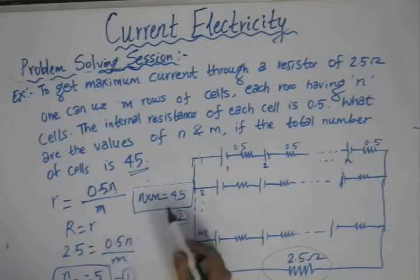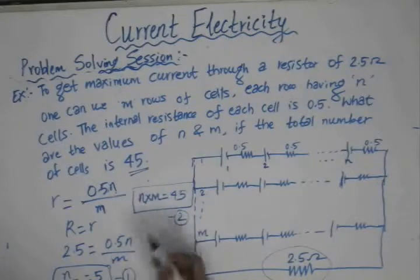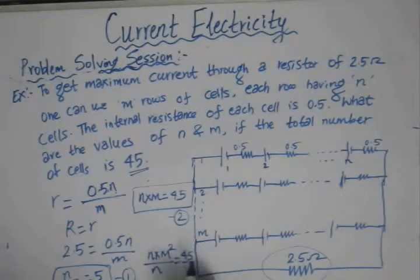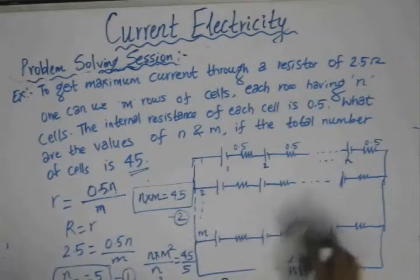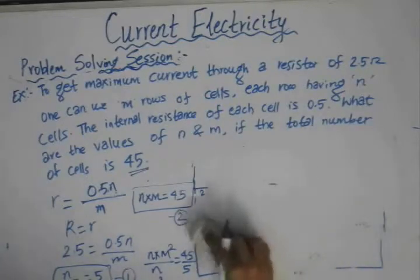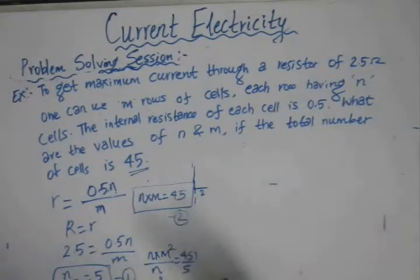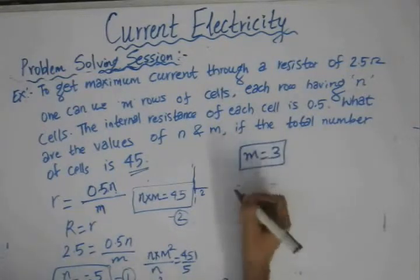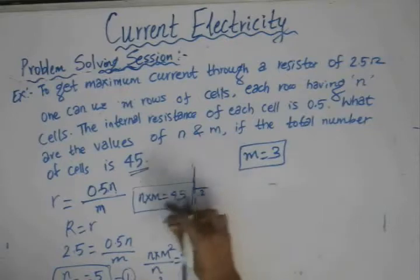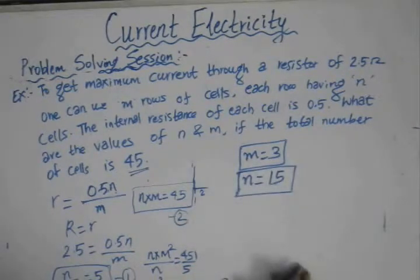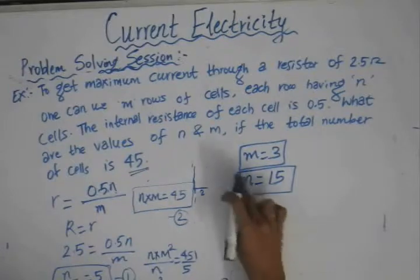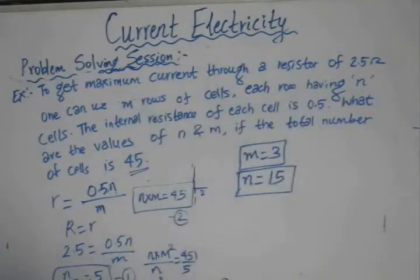Now, solving using these two equations, we can divide them to get M² = 9. Taking the positive value, M = 3. Substituting back, we get N = 15. So these are the optimum values: 3 rows of 15 cells each, so that the current through the external resistance of 2.5 Ohm is maximum.